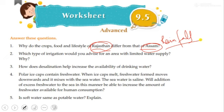What type of irrigation would you advise for an area with limited water supply? You can grow crops that need less water, and for irrigation you can use drip irrigation. In drip irrigation, there are very small holes in the pipe — when required, water comes out through the holes; otherwise the water remains in the pipe only, minimizing wastage.